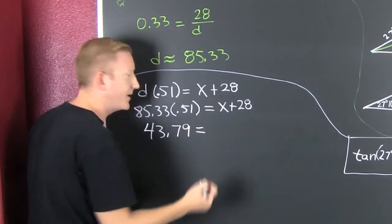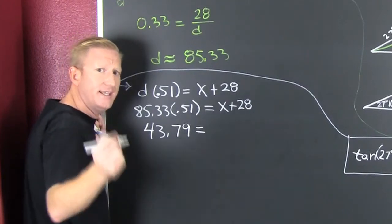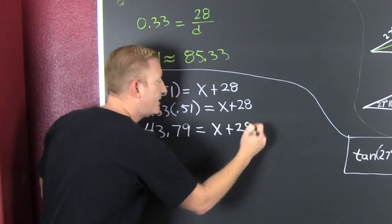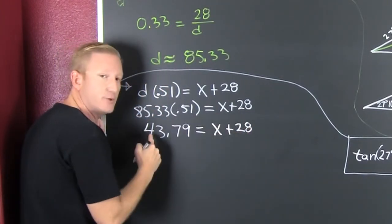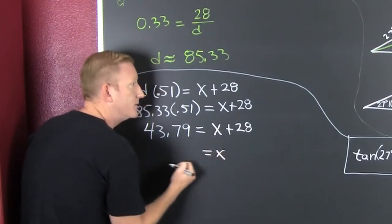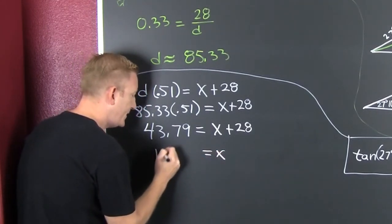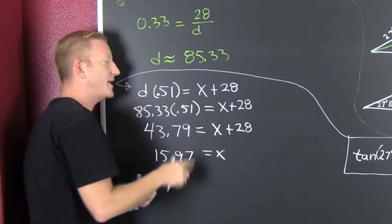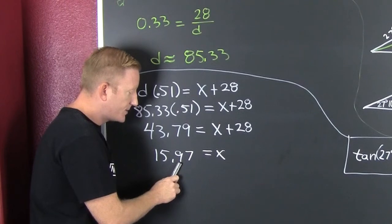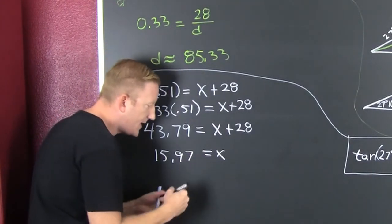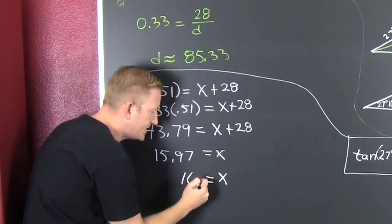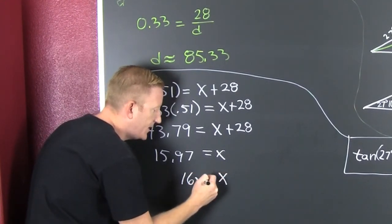So then this is X plus 28. I subtract the 28 off both sides, and I find that my X is going to be 15.97. All of those calculations were to the hundredths place, so I'm going to round to the tenths place — that 9 goes up — and my antenna is about 16 meters.